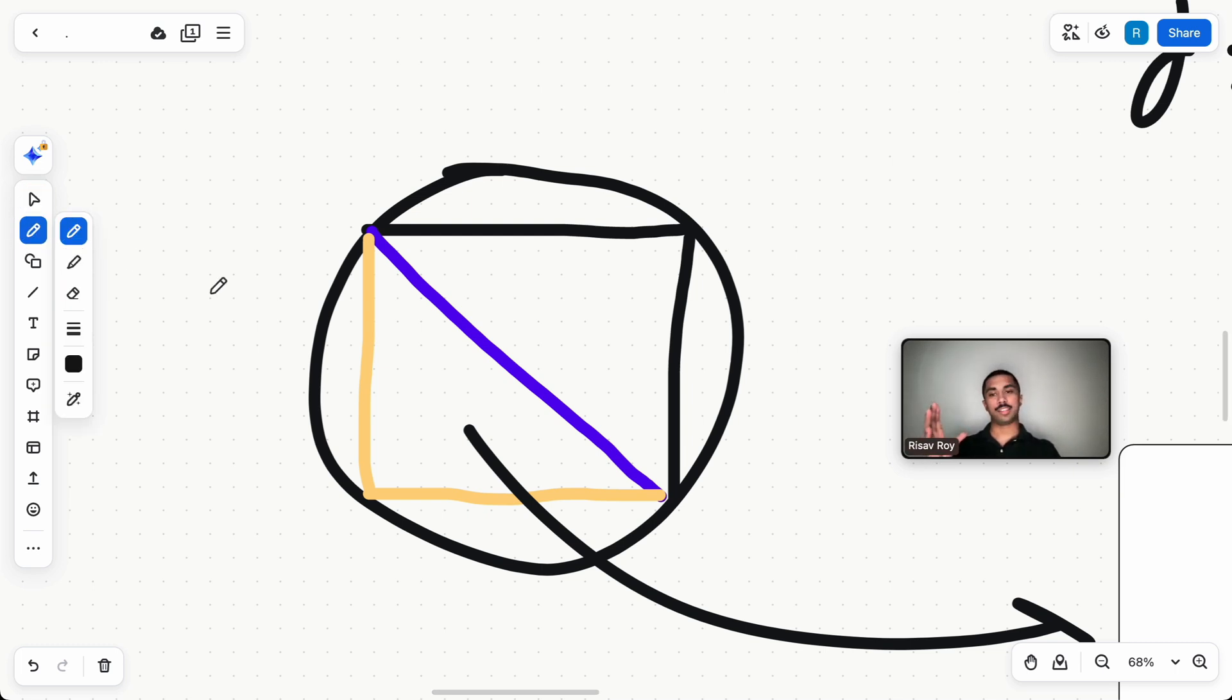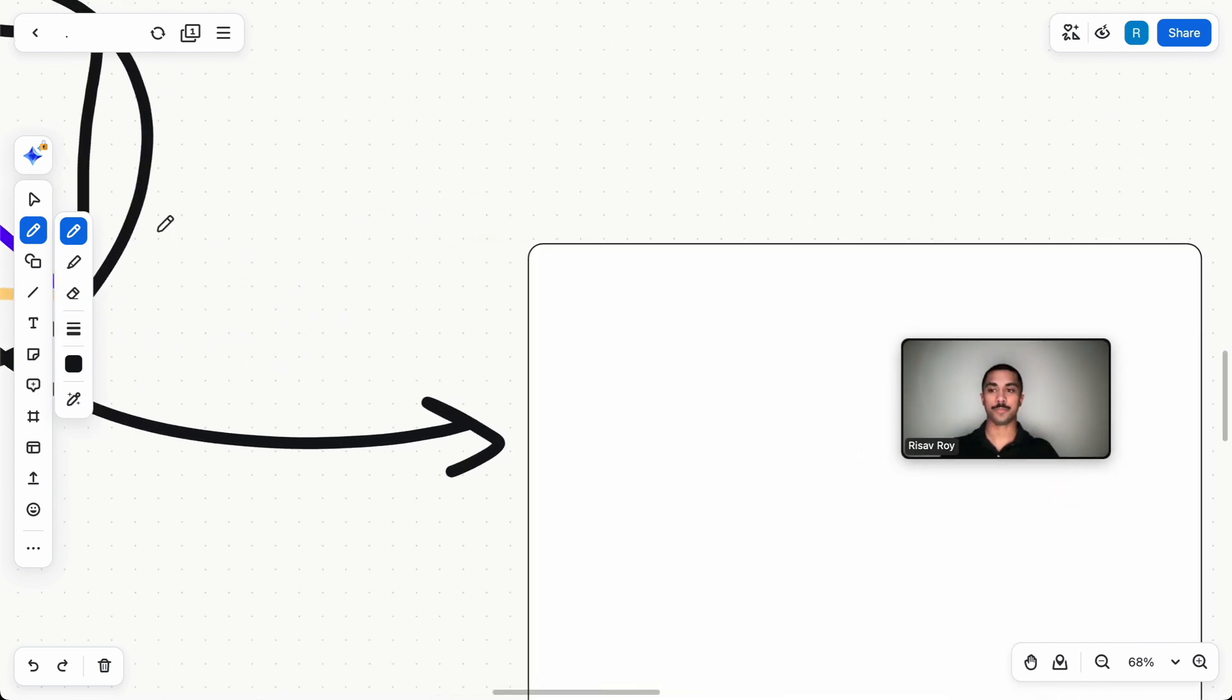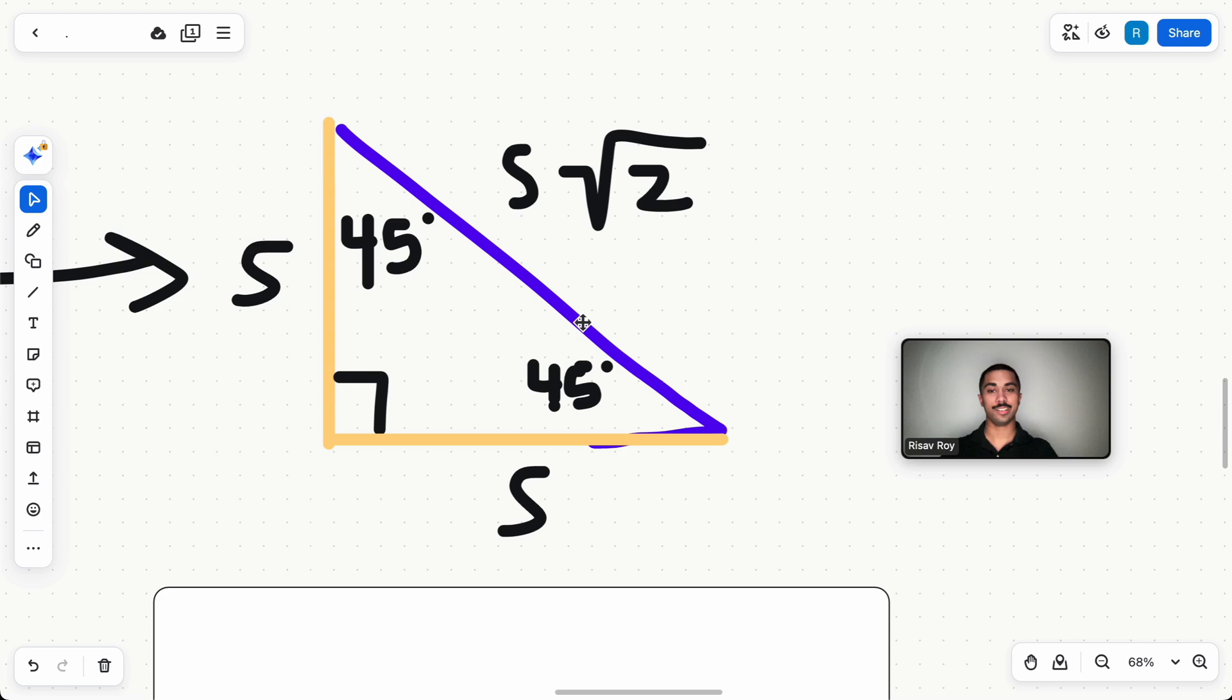We need the diameter, which is two times that, 2√30. Okay, the problem asks us to find the entire area of the square. So we just found the diameter. I mean, the diameter of the circle, the diagonal of the square. What we want to do is find the side lengths.